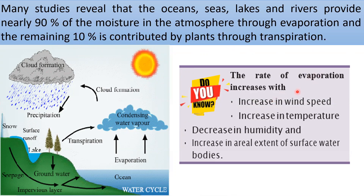The rate of evaporation increases with increase in wind speed. During windy days, wet clothes get dry very quickly. When the speed of wind is high, the rate of evaporation is also high. During hot and sunny days, clothes also get dried very quickly — increase in temperature results in a high rate of evaporation. When there is already humidity in the atmosphere, it is difficult for the atmosphere to absorb more water from the earth's surface, so increase in humidity decreases the rate of evaporation.